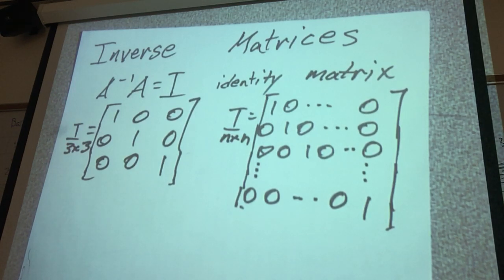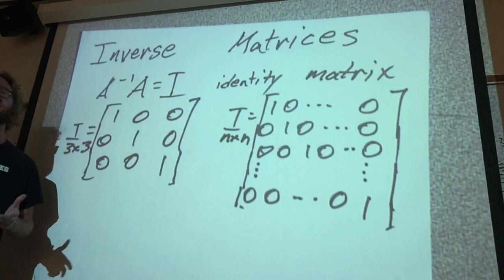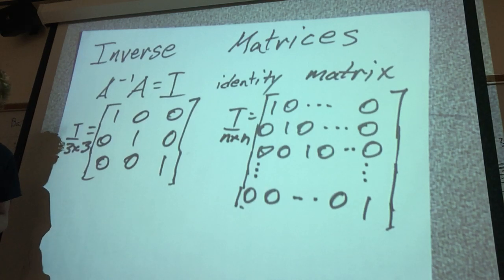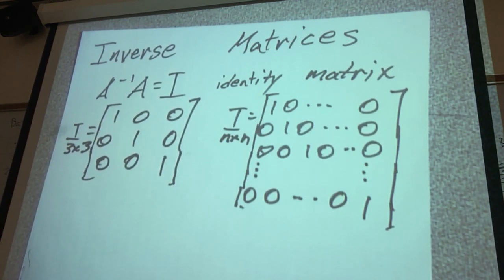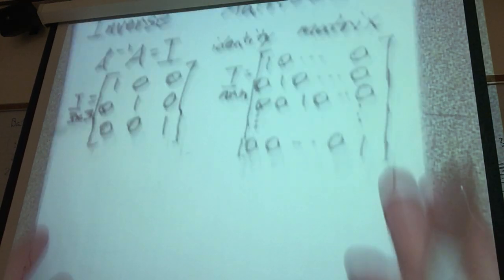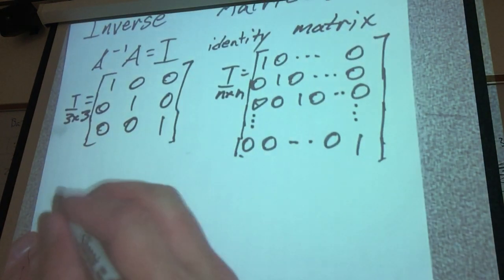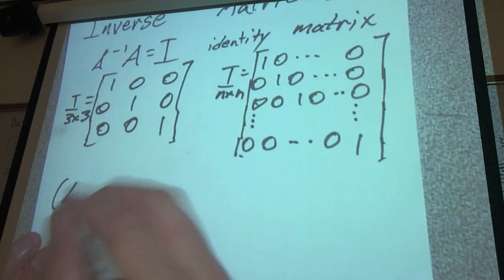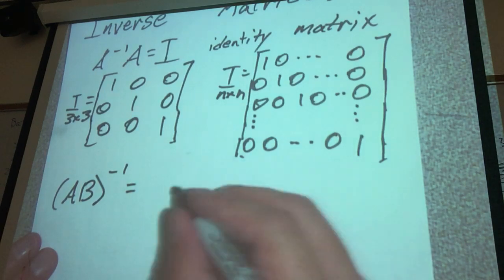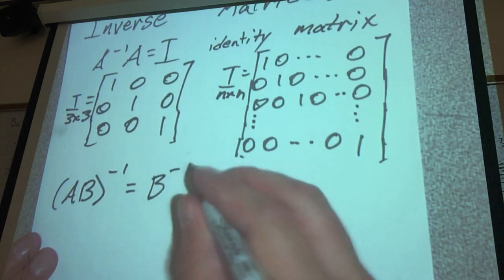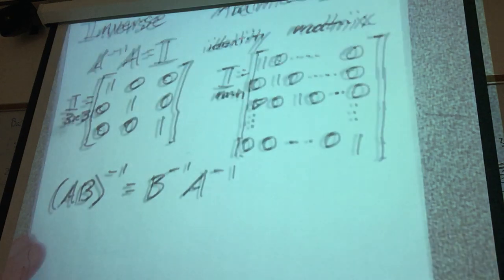These are the identity matrix, and so this is the equivalent of multiplying by 1. The identity matrix acting upon any matrix just gives you the original matrix that you were dealing with. A couple other facts about inverse matrices: if you have AB inverse, that actually equals B inverse, A inverse.